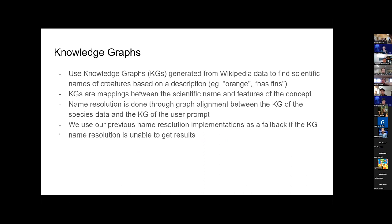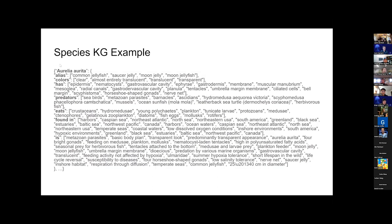The knowledge graph used in the second step for name resolution is built by taking the Wikipedia data for each concept in FathomNet and generating a knowledge graph from that using GPT-3.5. Once we have that, we do graph alignment between the species KG and the prompt KG to determine which species has the feature being asked for in the prompt. Here is an example of a species KG generated from the Wikipedia data — we have the scientific name of the concept and all the features it has. The locally saved JSON file generated during pre-processing contains this for every concept in FathomNet.